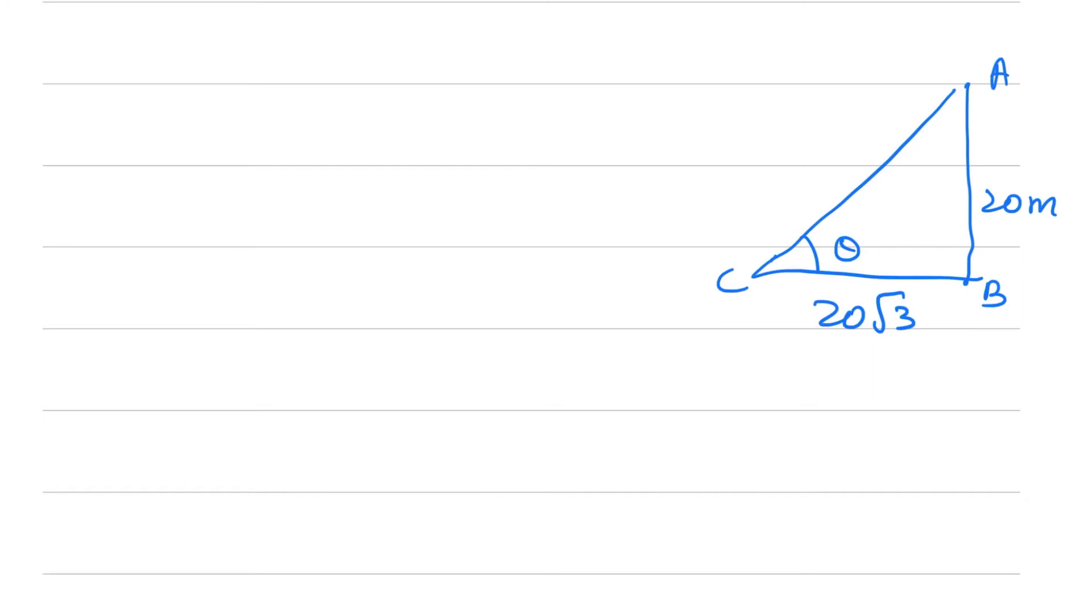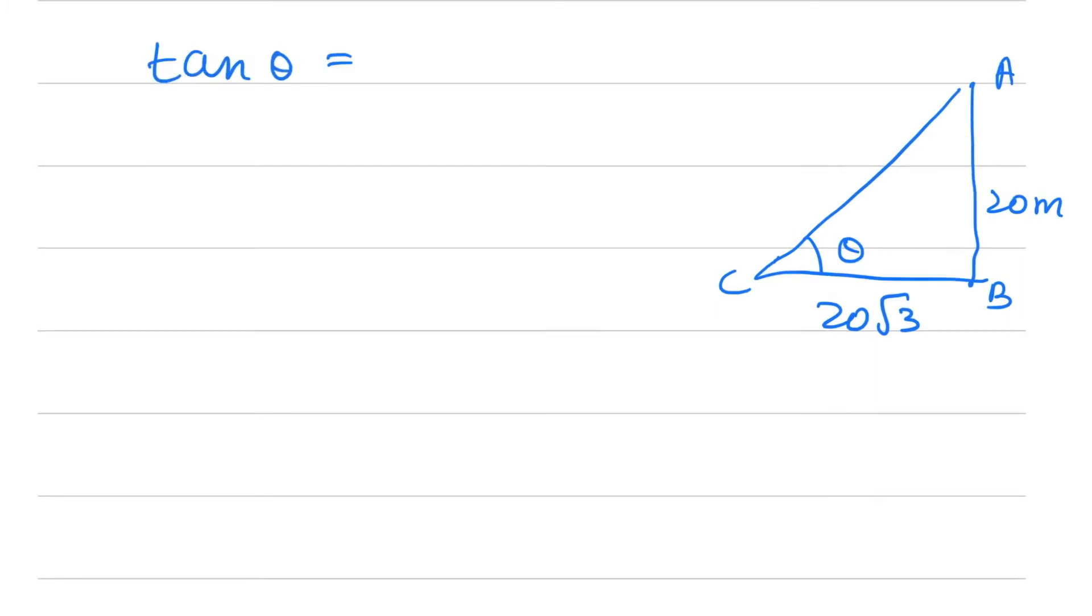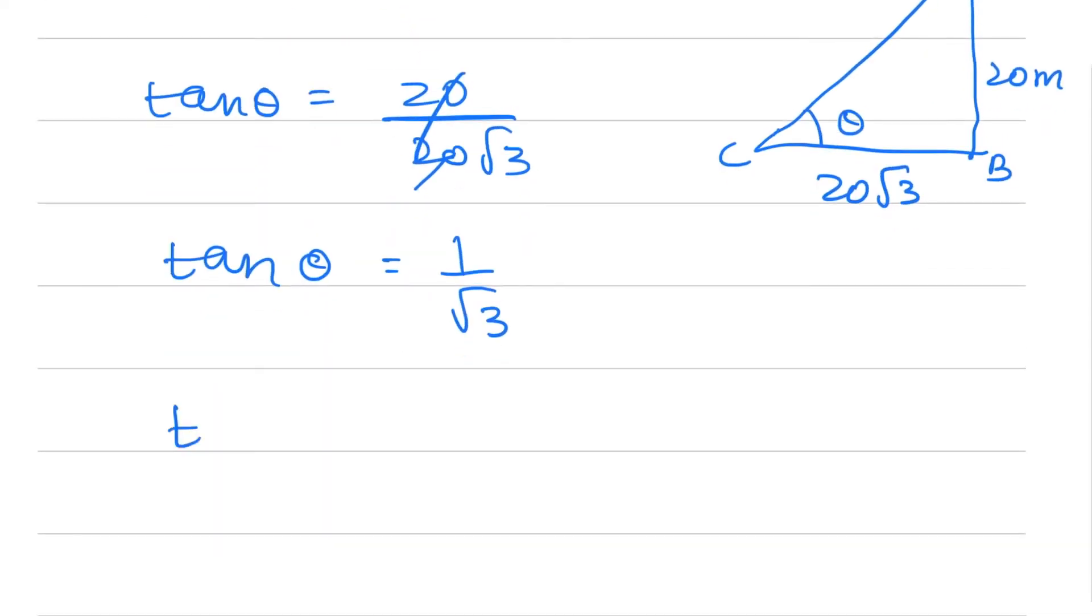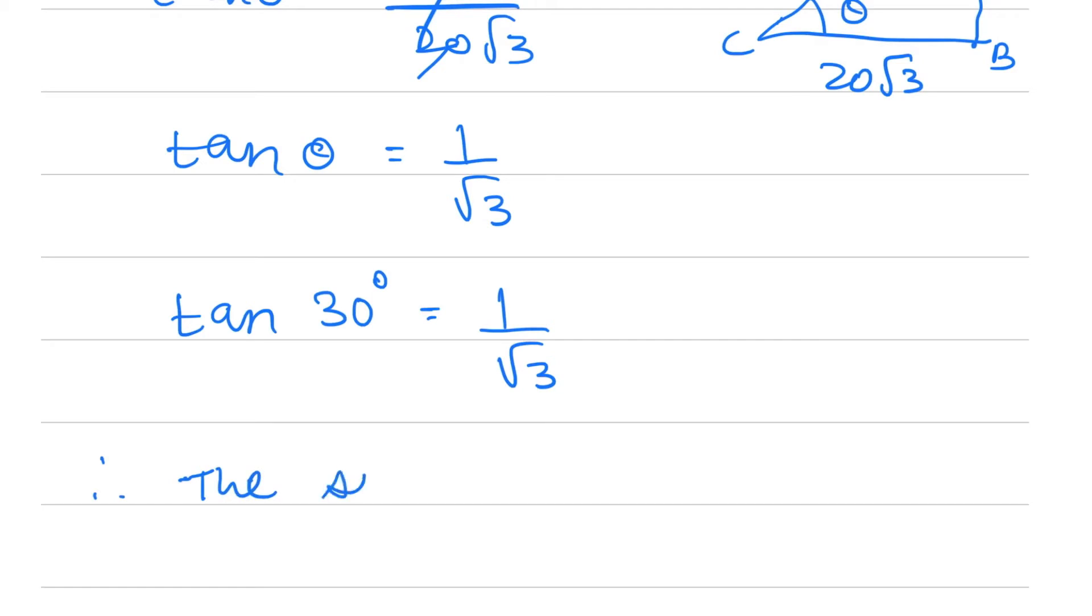So tan θ = perpendicular/base. tan θ = 20/(20√3). The 20 gets cancelled, so tan θ = 1/√3. We know that tan 30° = 1/√3. Therefore the sun's altitude is 30 degrees. This is the answer.